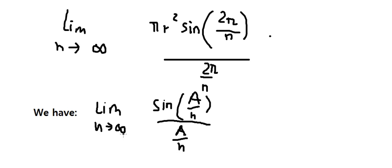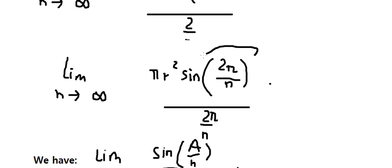When n approaches positive infinity, sine of A over A approaches one. So that means this limit equals number one, and here is the final answer.